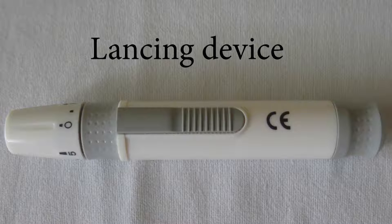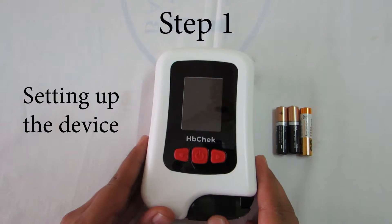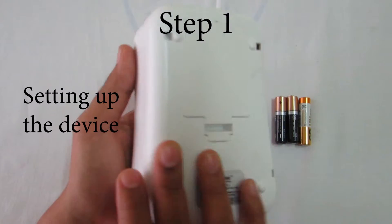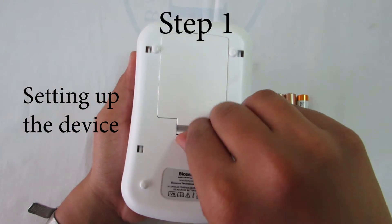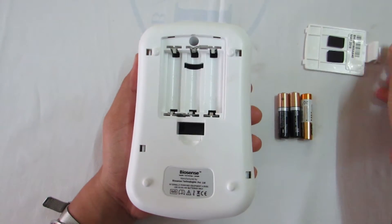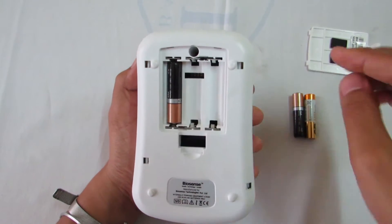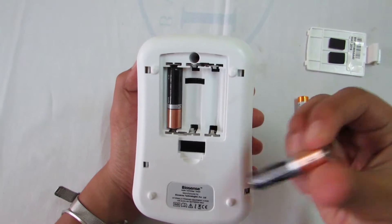Step 1: Setting up the device. Turn the device over and take out the back cover. Looking at the images in the battery slots, insert the batteries accordingly using the positive and negative terminals respectively.